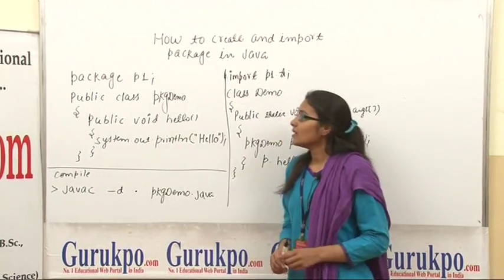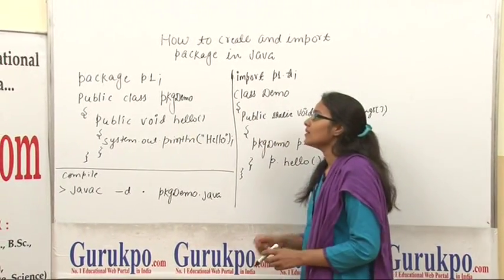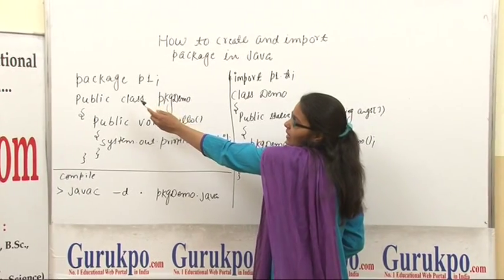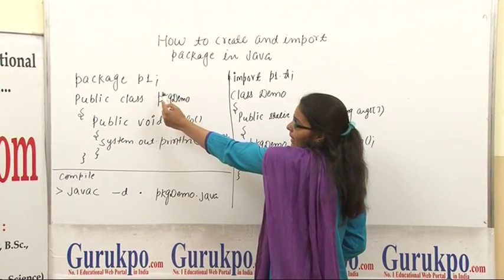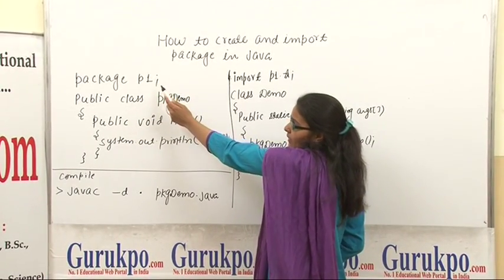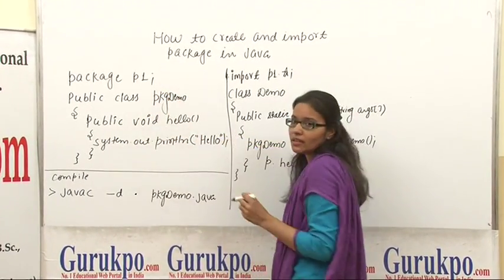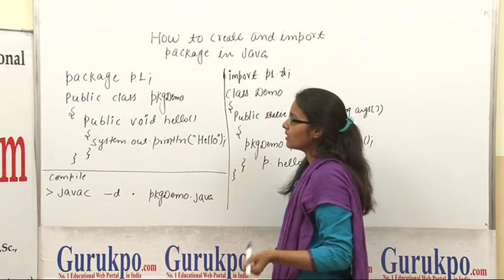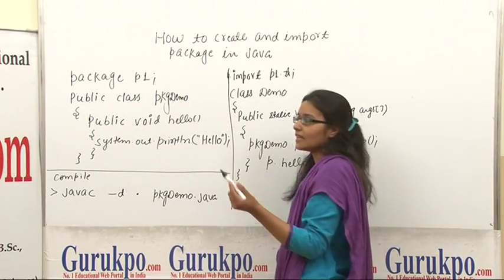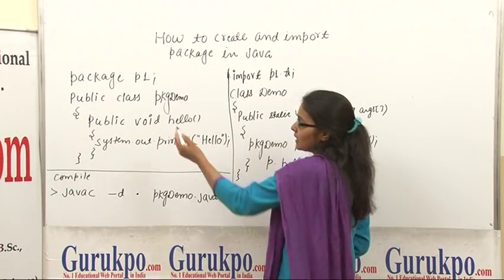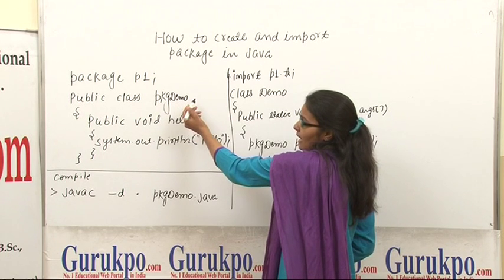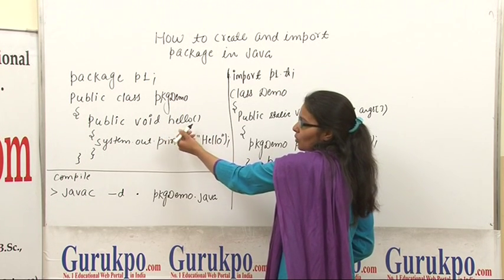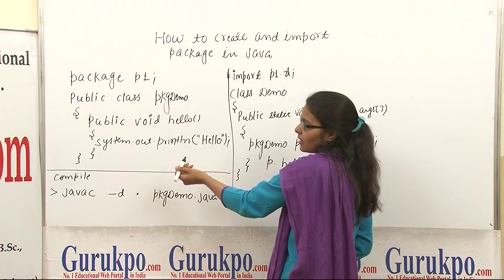Let us see through an example. Here we have created a package using the package keyword, then the name of the package — in this case p1 — followed by a semicolon. In package p1 we are creating a class with the name PackageDemo, and we have declared a method hello, which prints hello.